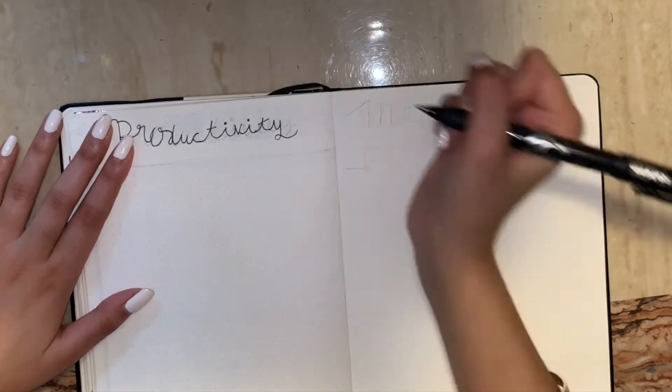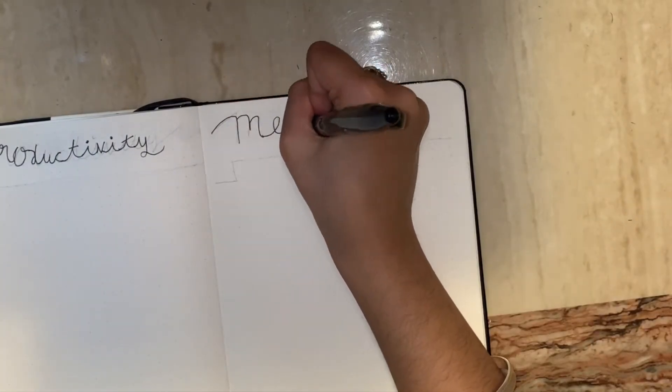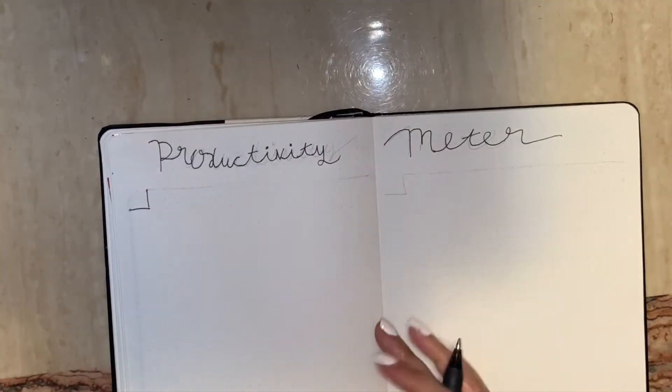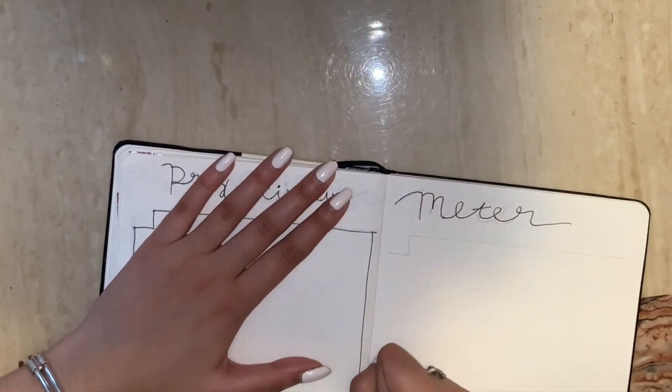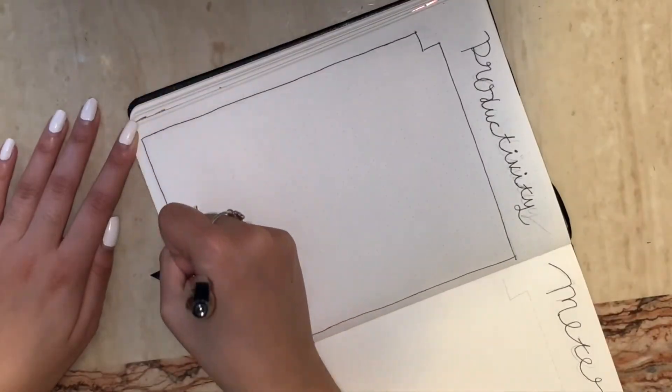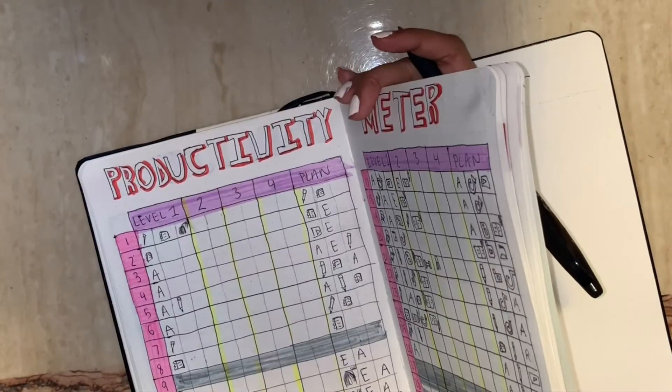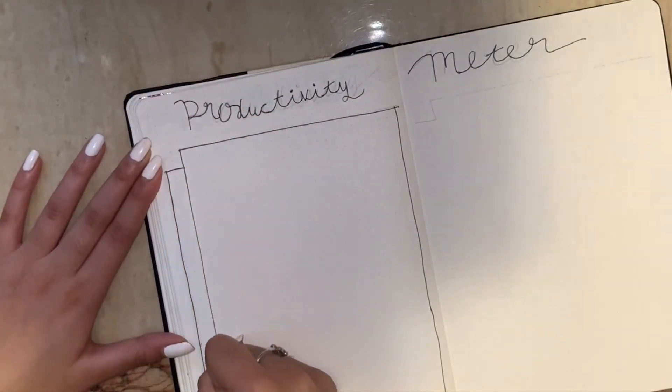Anyways I just added green to the design and now I'm moving on to the next page which is a productivity meter, which I did do last month also. I find it really helpful because it just helps me stay motivated to get things done because I want to add them to the meter. I'm just doing the same setup I did last month.